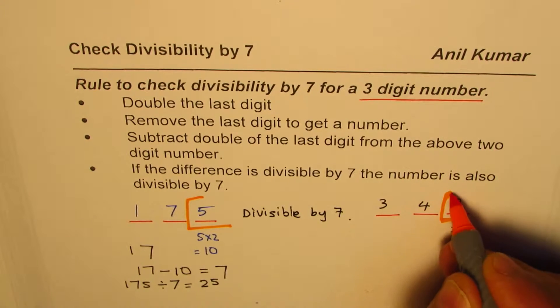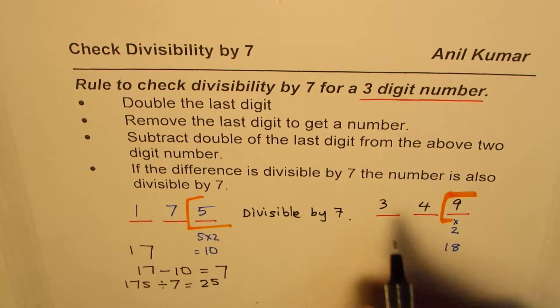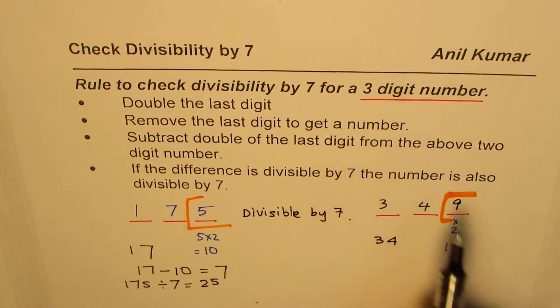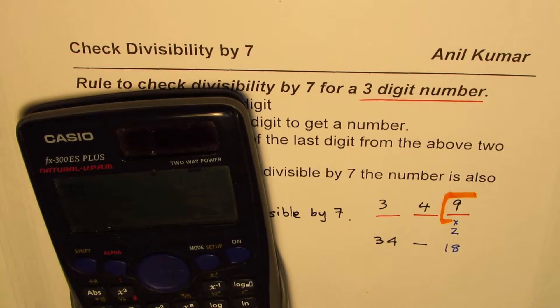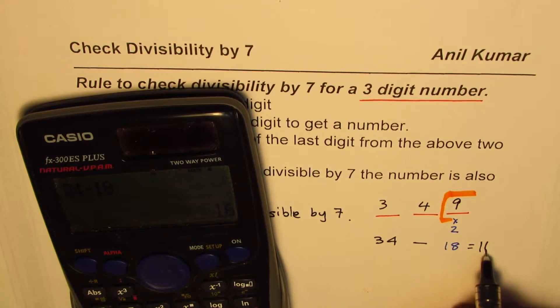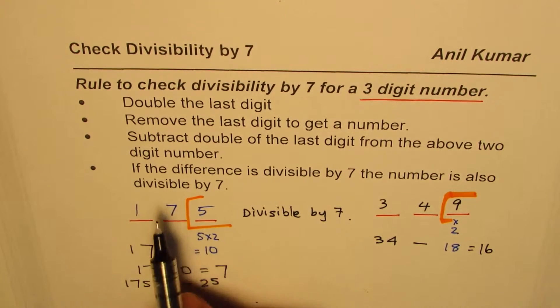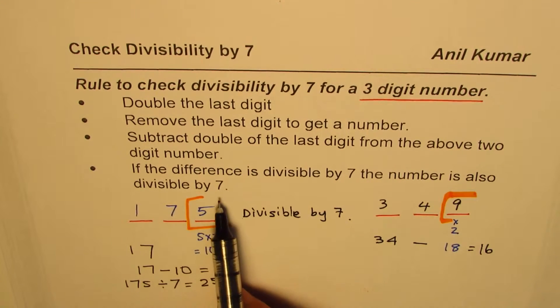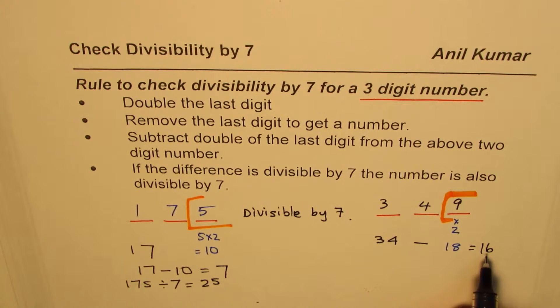Subtract double of the last digit from the above. This is the double of the last digit. We'll take it away from 34. Let's use calculator. We have 34 take away 18, we get 16. If the difference is divisible by 7, the number is also divisible by 7. 16 is not divisible—14 could have worked but not 16. So it is not divisible by 7.